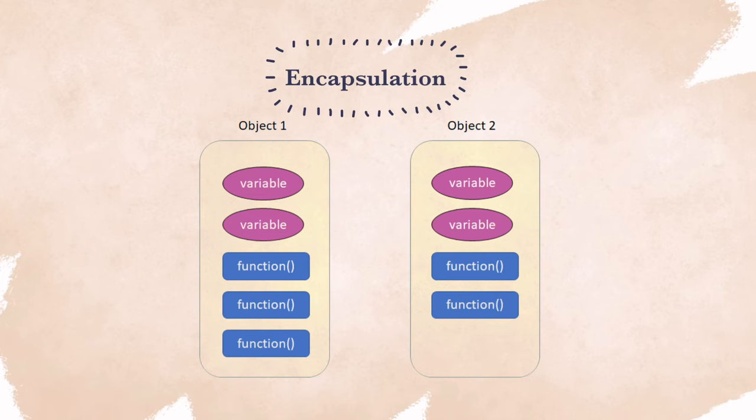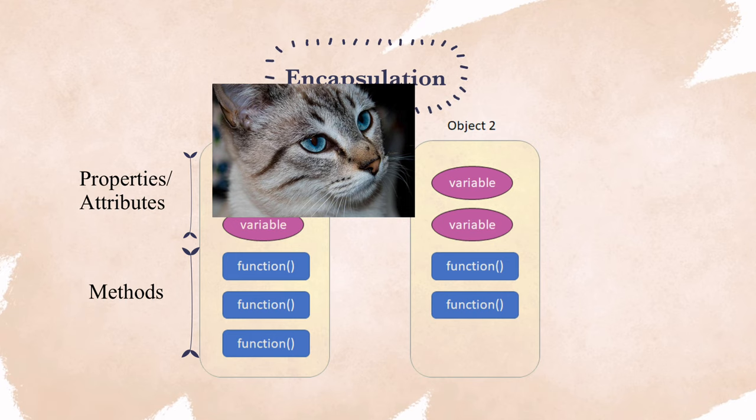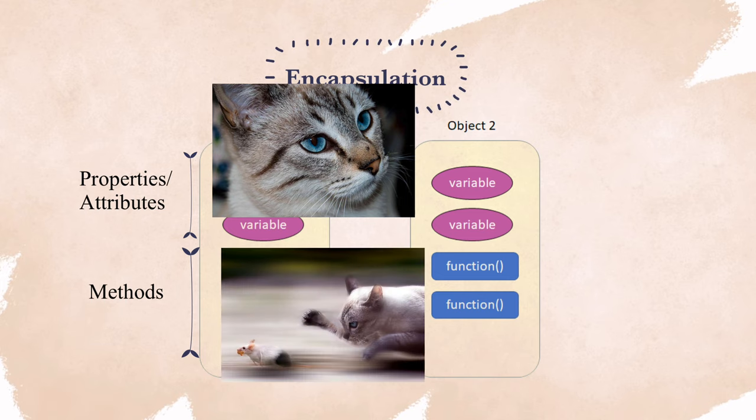Encapsulation means that OOP groups variables and functions into entities called objects. Variables inside objects are called properties or attributes, and the functions are called methods. Think of properties as characteristics of an object, such as a cat has blue eyes.